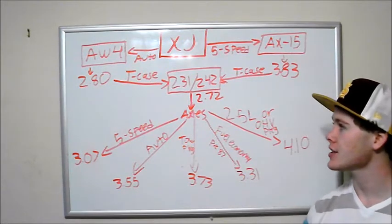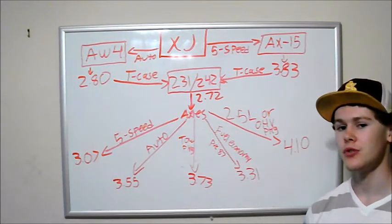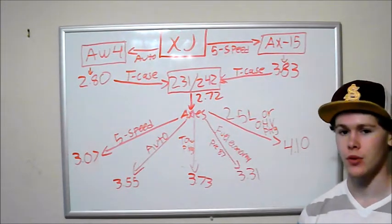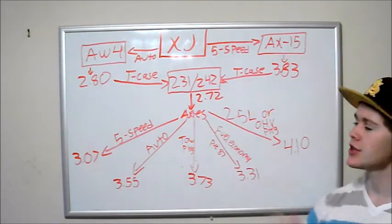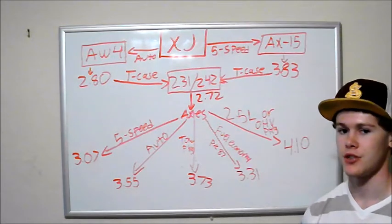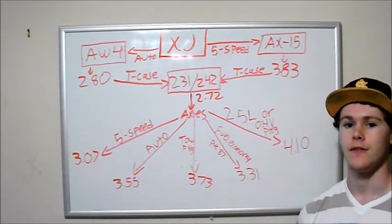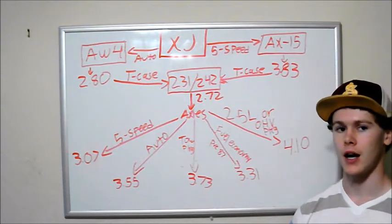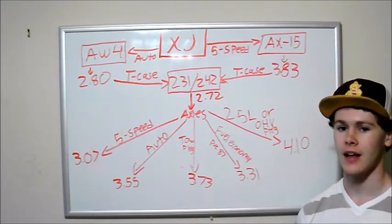With your transfer case, you're either going to have a 231 or a 242 transfer case. Either way, they both have a 2.72 ratio. The way you can tell these two apart without having to get up underneath the Jeep is if you look at your transmission shift lever. If you have a 231, you have 2-wheel drive, neutral, 4-wheel high, and 4-wheel low.